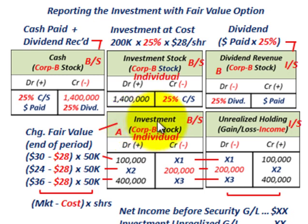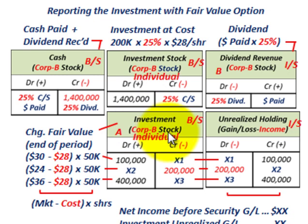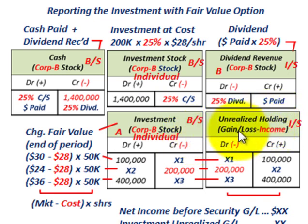You're going to have another investment account, also labeled specifically for Corp B's stock, on an individual basis — both recording the cost and recording the change in fair value for each reporting period. Tied into that investment account is an unrealized holding gain or loss account, and that's going to be recognized as income on our income statement.